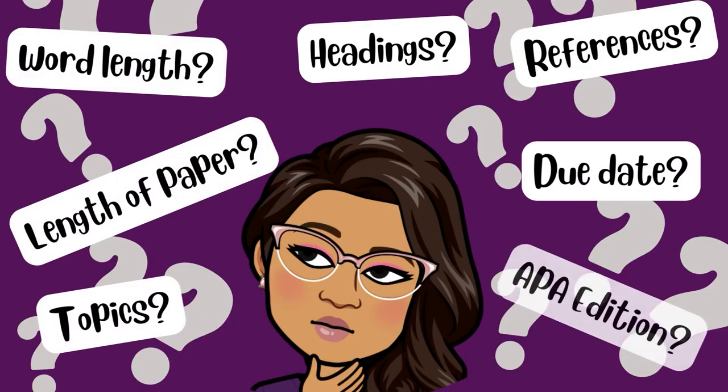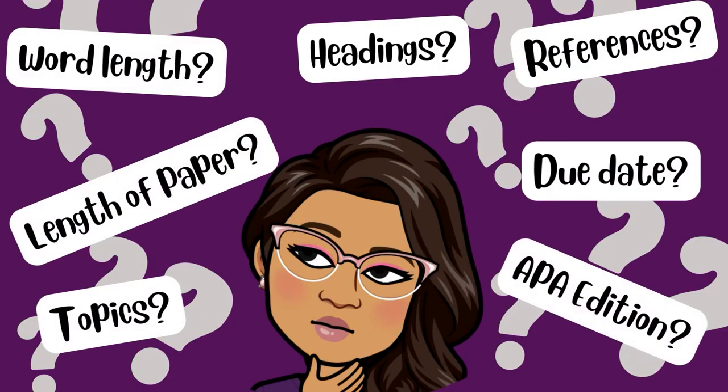Review and make sure you fully understand the assignment instructions — things like word count, the length of the paper, the topics to be discussed, the number of references you need to include, the headings you need to use, which APA format you're expected to follow (the sixth edition or the seventh edition), and when the assignment is due. All these things are really important to understand before you even start writing.